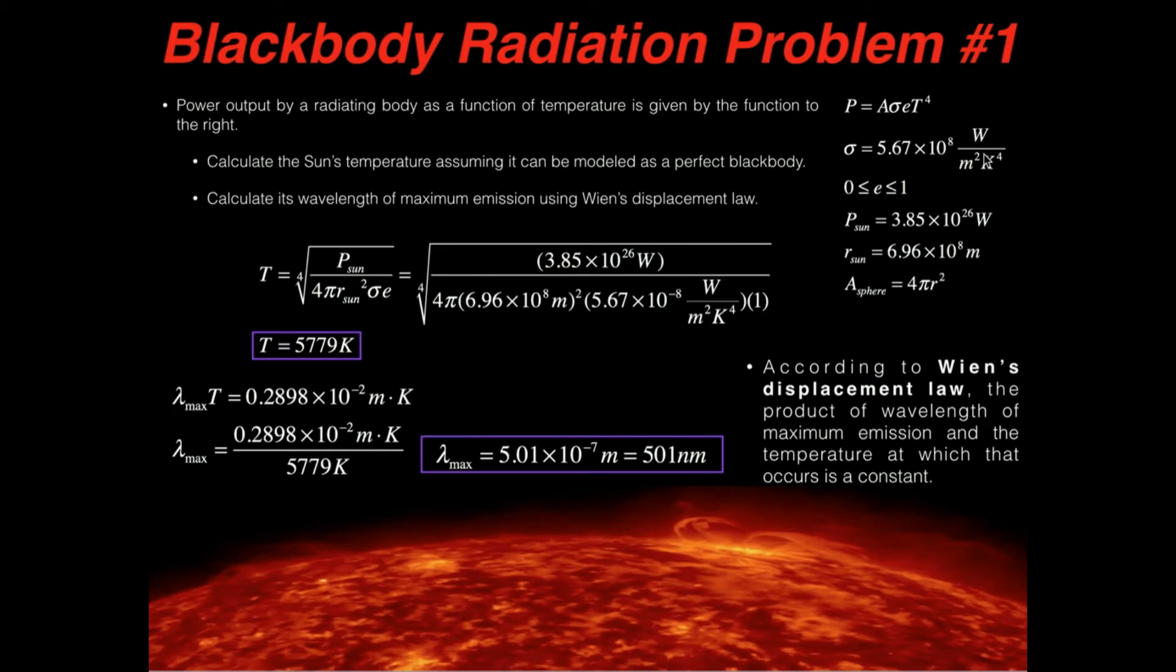All right, so we're going to take this formula, our power output for a black body, and we're going to solve it for T, since we want to determine the temperature. So I already have it solved down here. So the temperature of a perfect black body, in this case our Sun, is going to be the power output of the Sun divided by 4 pi r squared sigma E, all right? And notice for this area, I've already made the substitution of area being 4 pi r squared. And then when you get this quotient, you then take its fourth root.